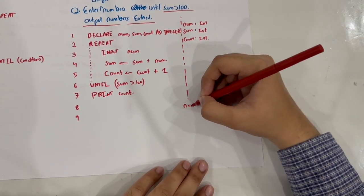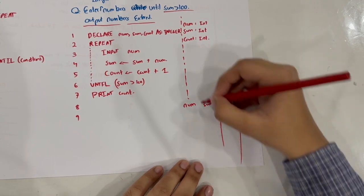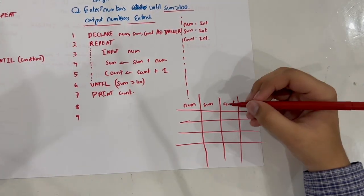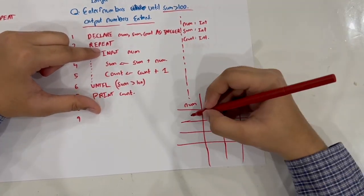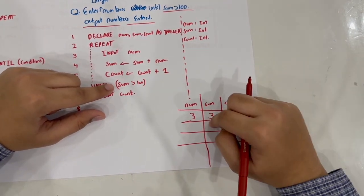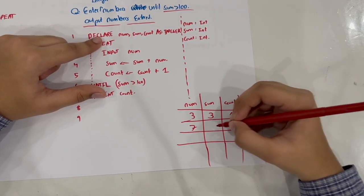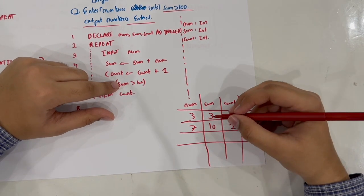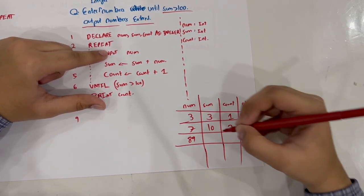Now let's trace through the program with a trace table. We have three columns: num, sum, count, and output. We declare the variables, then enter the repeat loop. Let's say the first number entered is 3 — sum becomes 3, count becomes 1. Is sum greater than 100? No, so we repeat. Next number is 7 — sum becomes 10, count is 2. Still not greater than 100, so we repeat again. Let's enter 89 — sum becomes 99, count is 3.